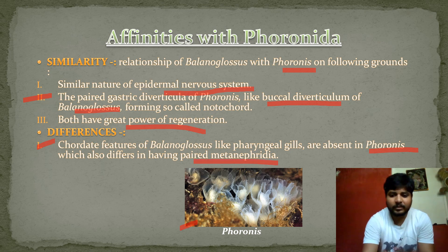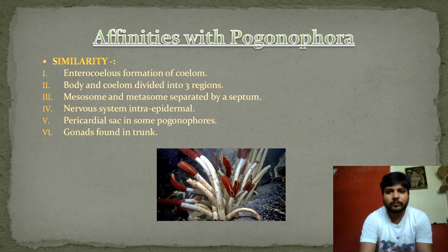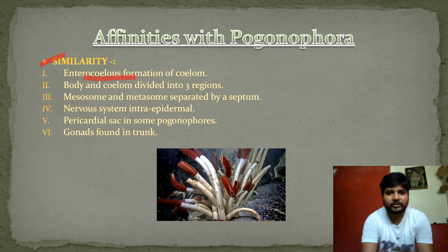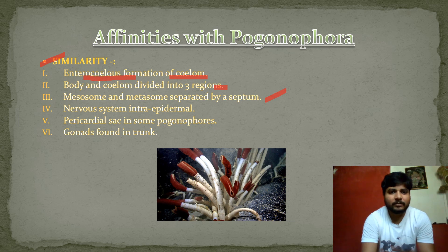Next are the affinities with Pogonophora. There are similarities between Pogonophora and Hemichordata. The enterocoelic formation of the coelom — as seen in Hemichordata/Balanoglossus — also occurs in Pogonophora. The body and coelom are divided into three regions in both. The nervous system is intraepidermal, a pericardial sac is present in Pogonophores, and gonads are found in the trunk.